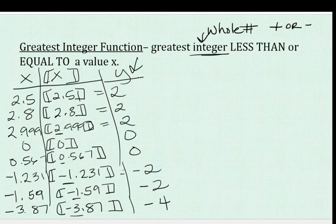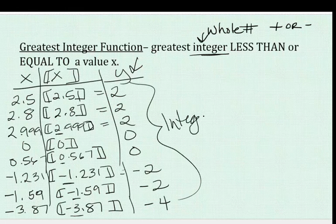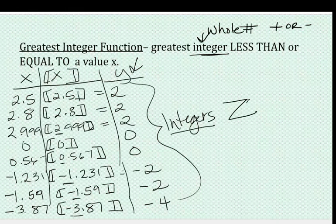Notice all your y values are whole numbers — all your y values are integers. This is going to be important as we talk about range. In the big math world, the group of numbers we call integers — the whole numbers that include negatives, positives, and zero — has a symbol: a big Z with a double bar. So notice all your y values are integers; your x values are not integers, except for 0. All those with decimals are not integers, but your y values are all integers.